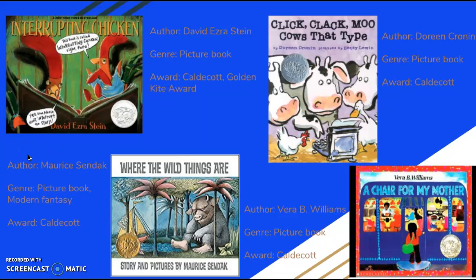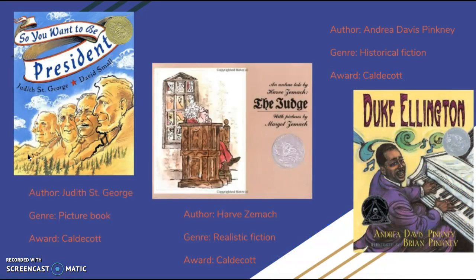Some other texts I've read for this book set are: Interrupting Chicken by David Ezra Stein, a picture book about a chicken who can't help but interrupt her father's bedtime story; Click, Clack, Moo: Cows That Type by Doreen Cronin, a hilarious picture book about cows that go on strike using a typewriter to communicate with their farmer; Where the Wild Things Are by Maurice Sendak, a wild story about a kid named Max who imagines a world where he's king of the wild things; and A Chair for My Mother by Vera B. Williams, an exciting story about a girl, her mom, and grandma who work hard to buy a chair for their house.